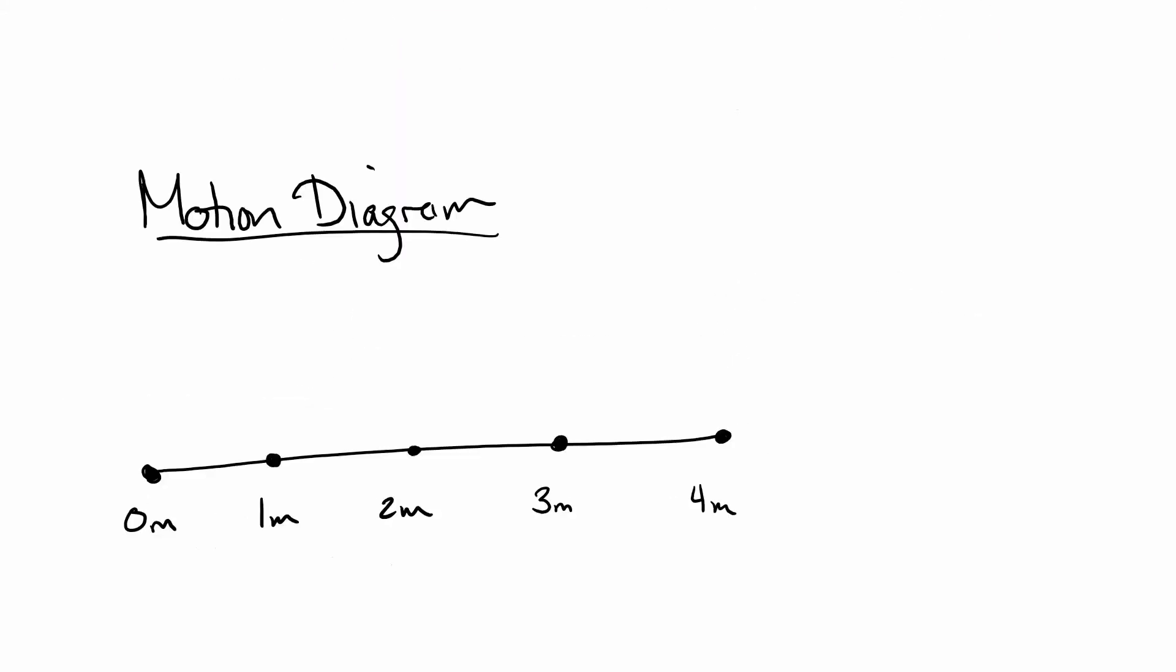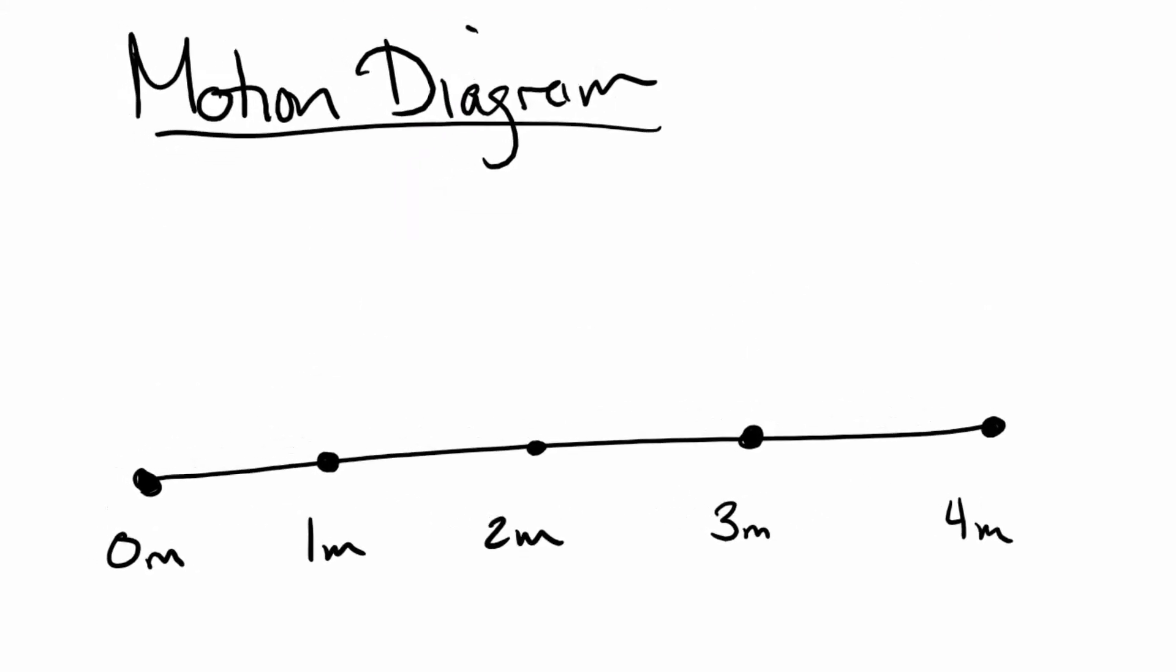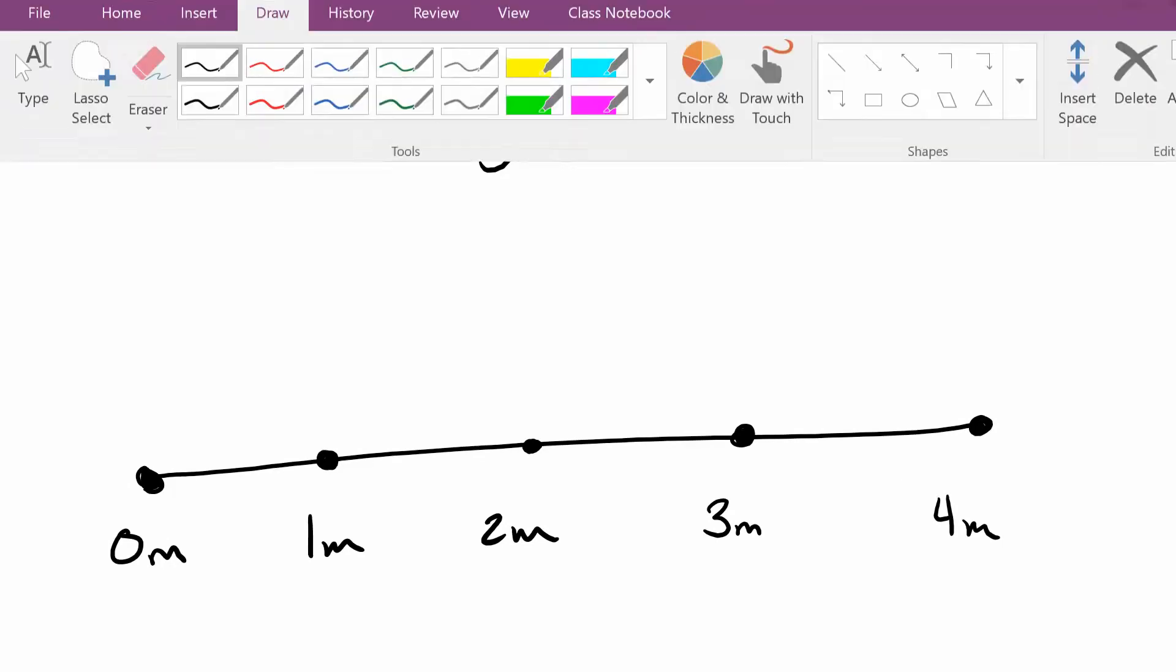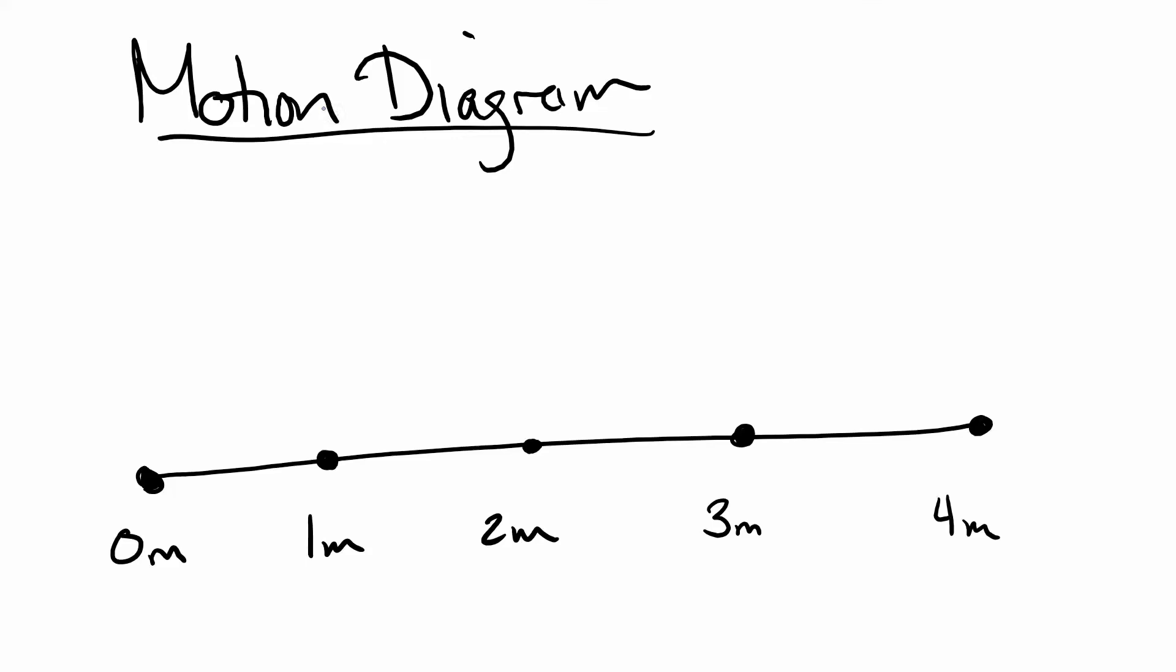Now, when it comes to representing this, we're going to want to use something called a motion diagram. This is a good way to get ourselves started. What I have here is a nice little axis with a couple positions marked out, and what I want to do is draw a dot to represent my object that's moving. This dot is happening at some moment in time. I'm locating where it is and when it is.